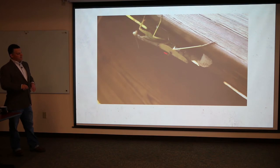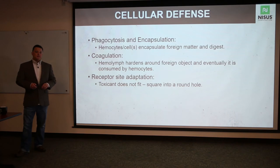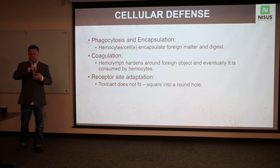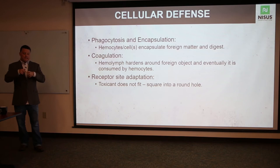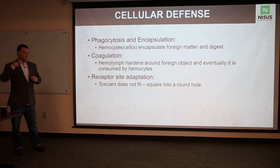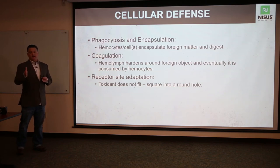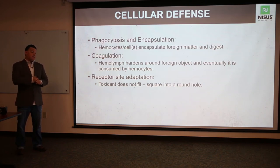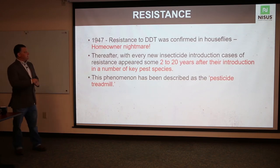The cellular defense of an insect includes cells in its hemolymph that attack foreign objects, encapsulate them, and consume them. The hemolymph can also coagulate like blood, and hemocytes will eat foreign material. Most importantly, consider the receptor site your insecticide is trying to find. Product A has a square peg trying to find a square hole — but sometimes the insect evolves and that square hole changes, so the product just doesn't work. This can happen through behavior or pure cellular adaptation.